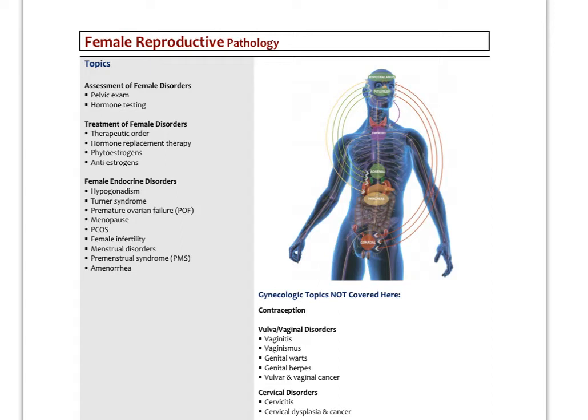Hello and welcome to part two of female reproductive pathology. In the previous video we reviewed the assessment and treatment of female disorders. Here I'm going to focus on specific female endocrine disorders. We'll start with hypogonadism, Turner's syndrome, premature ovarian failure, menopause and PCOS, and female infertility. In the subsequent video we'll look at menstrual disorders, PMS, and amenorrhea.